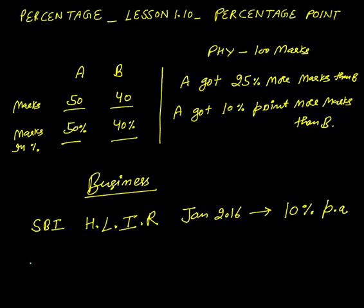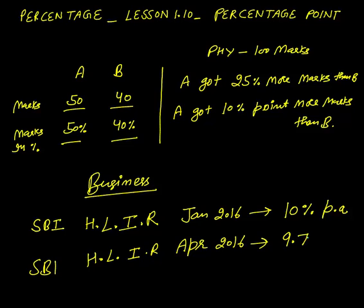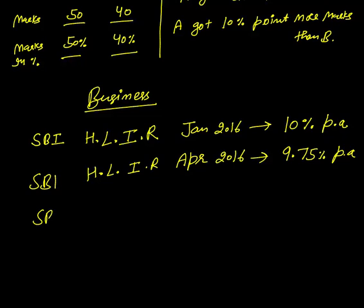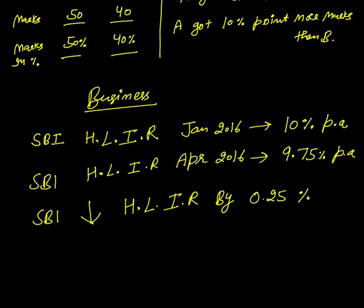Same State Bank of India home loan interest rate, let's say April 2016, is 9.75% per annum. Now what we will say: we will say that State Bank of India reduces — this down arrow means reduces — home loan interest rate. This is the difference between two percentages, so we will say that State Bank of India reduces home loan interest rate by 0.25 percentage point.